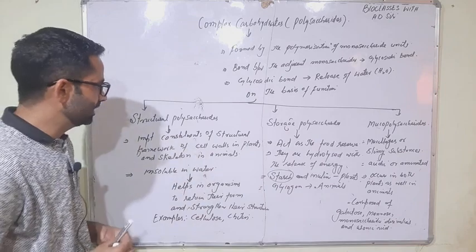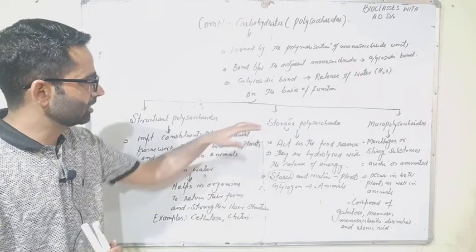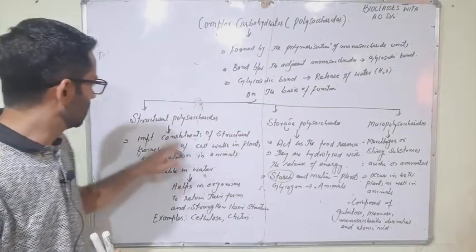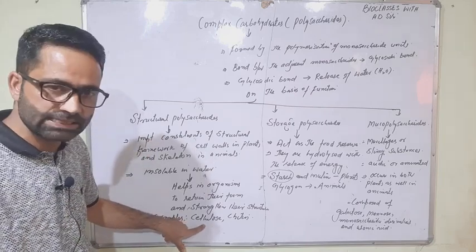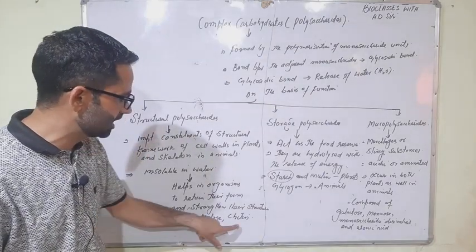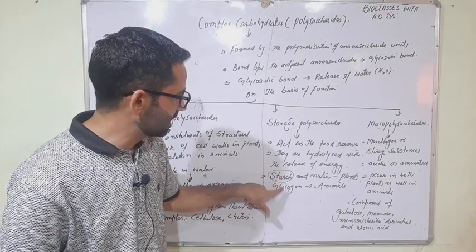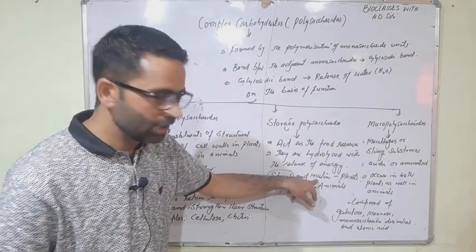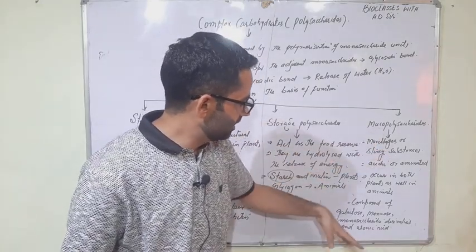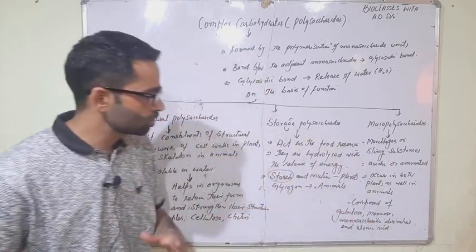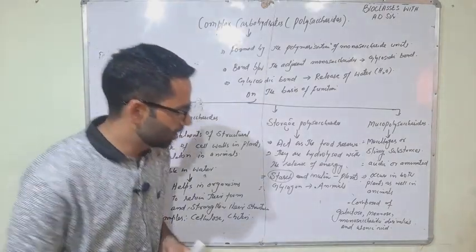So the three types of polysaccharides on the basis of function are: structural polysaccharides — with the two classical examples being cellulose and chitin; storage polysaccharides — with the main examples being starch, glycogen, and inulin; and the third category, mucopolysaccharides, which are mainly made up of galactose, mannose, monosaccharide derivatives, and uronic acid.